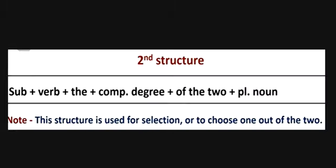To summarize: Structure 1 example — 'This player is better than that player.' Structure 2 example — 'This player is the better of the two players.' Note that after 'of the two' we use a plural noun, for example 'of the two players' or 'of the three players.'